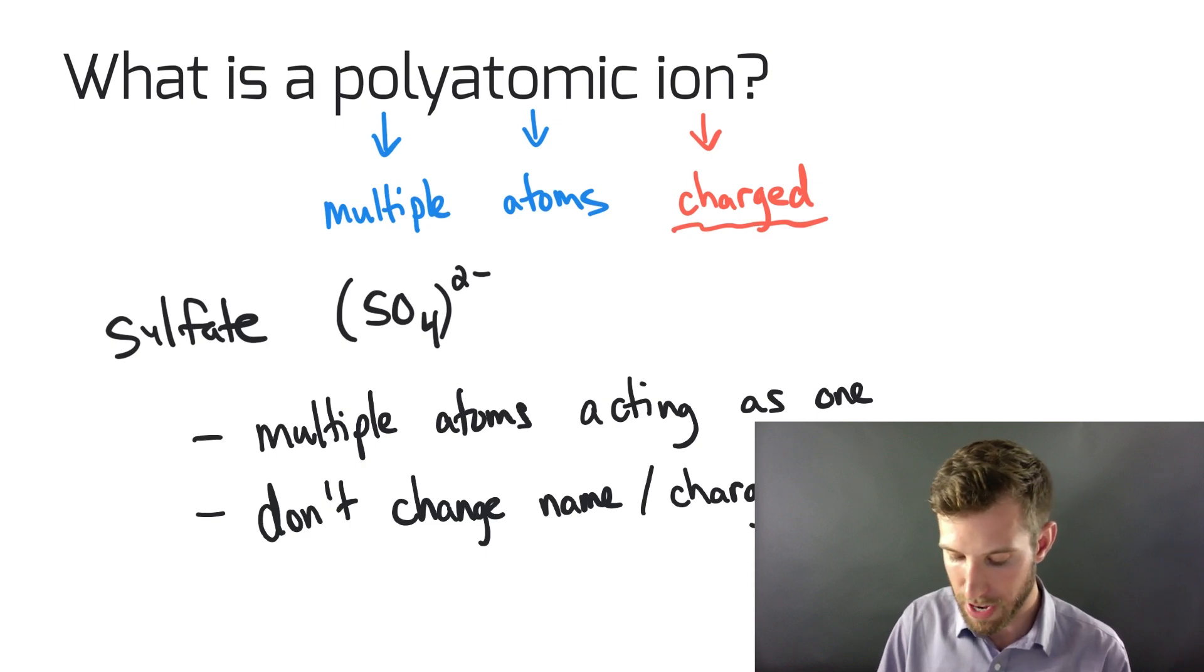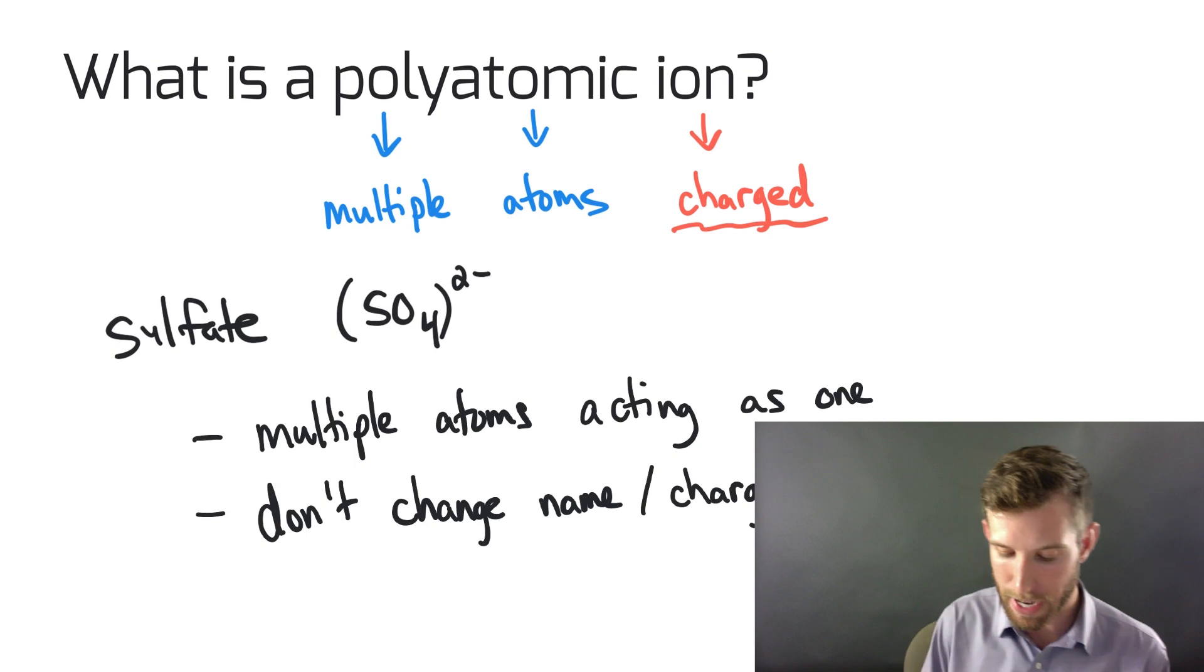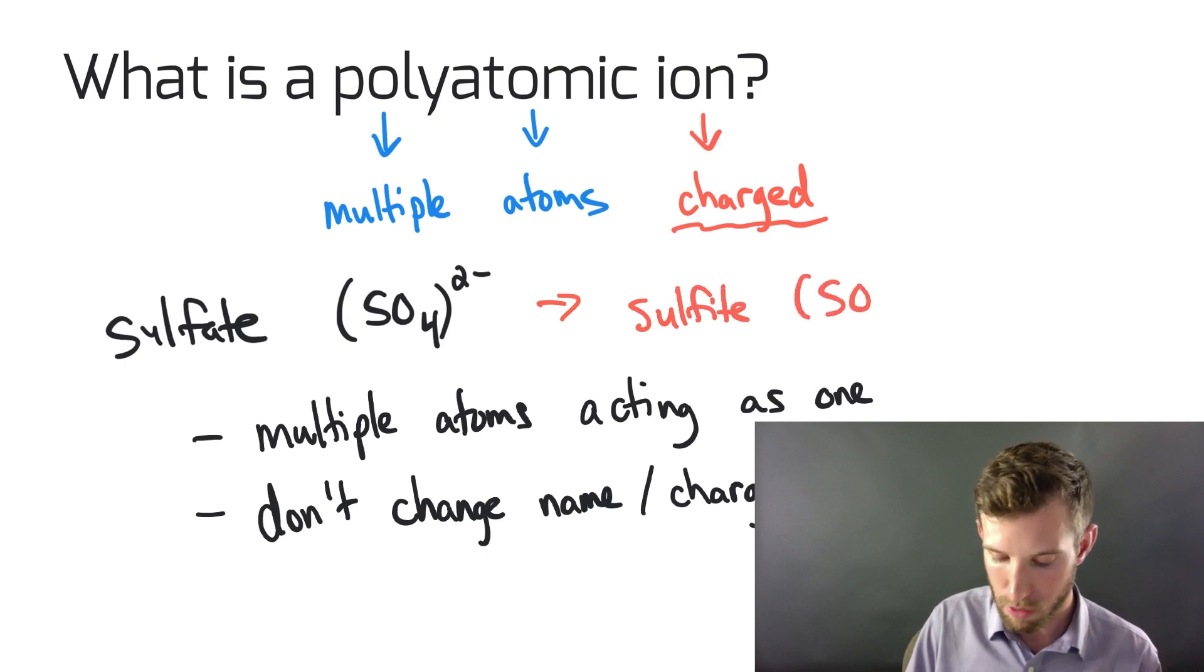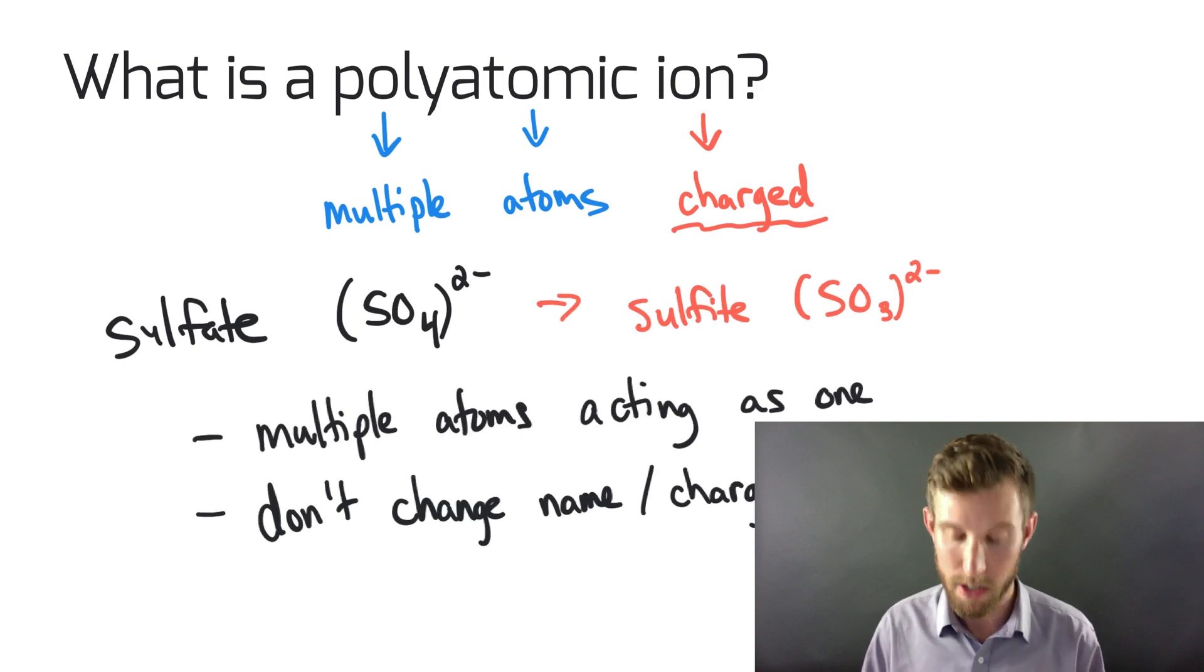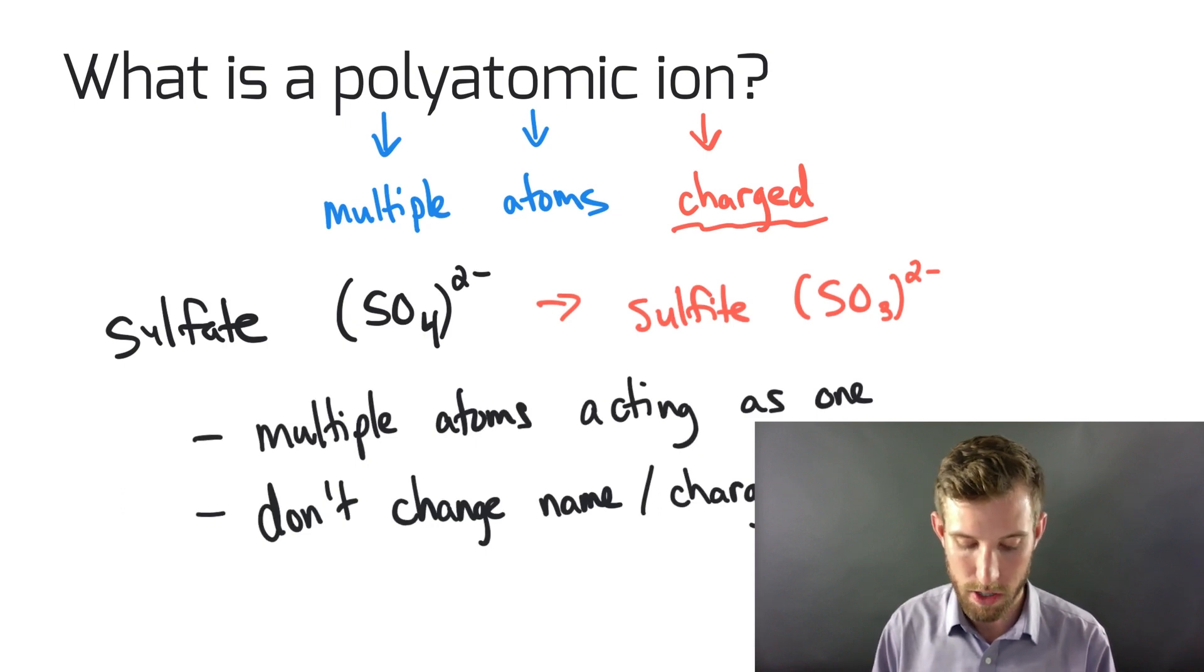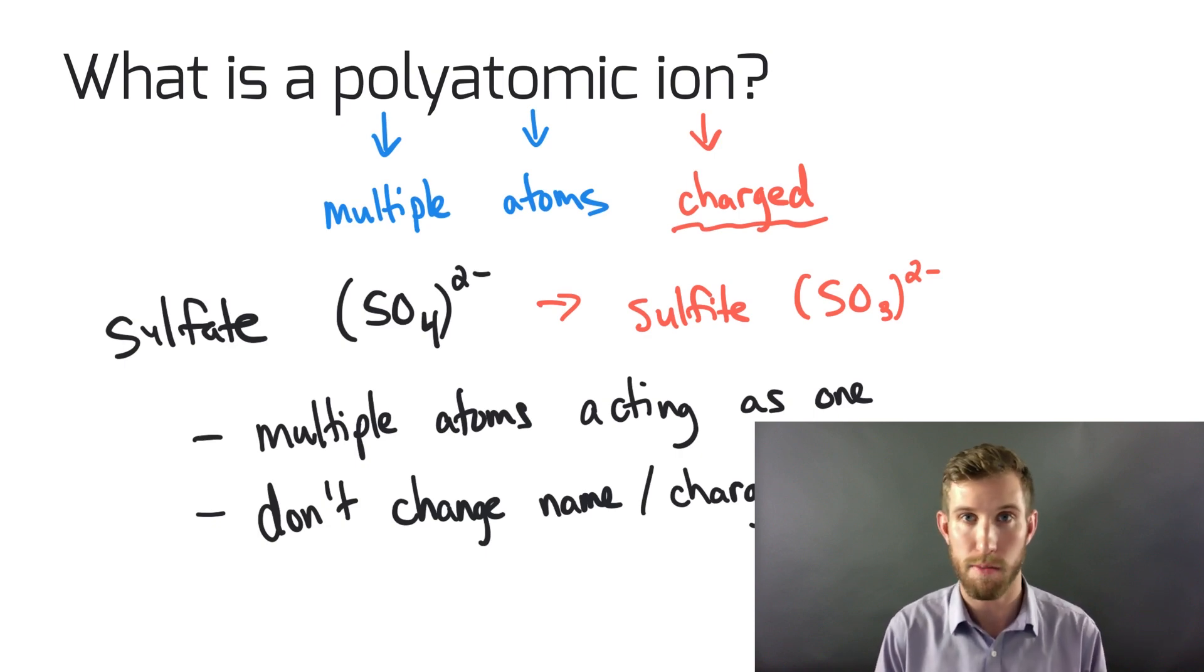Sulfate and sulfite are very similar. Sulfate as we described before was SO4 2-. What actually happens is there's something called sulfite, which is SO3 2-. Very little differences. They have the exact same charge. The only difference between sulfate and sulfite other than the spelling is you have four oxygens in sulfate and three oxygens in sulfite. Be very careful that you recognize polyatomic ions as multiple atoms acting as one, and that they don't change their name or charge. Sulfate is always SO4 2- and sulfite is always SO3 2-.